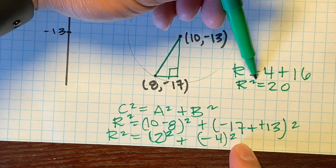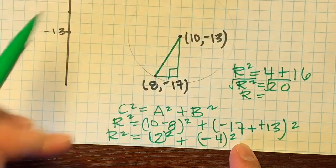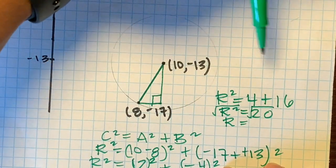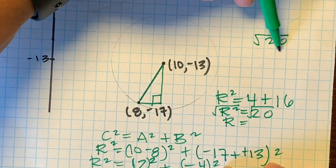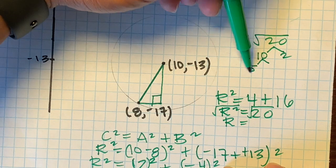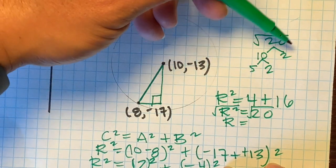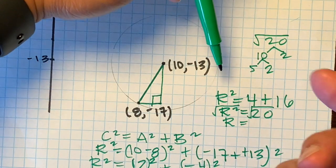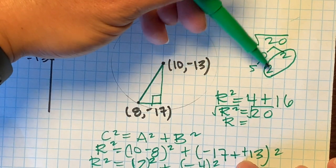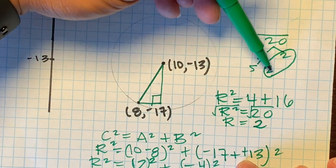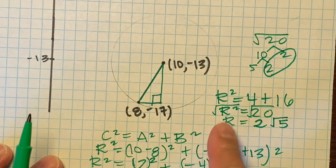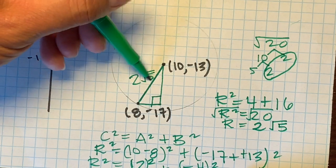To get r by itself, we square root both sides. With square roots, you're trying to find pairs. Let's factor 20: two numbers that multiply to 20 are 10 and 2, and two numbers that multiply to 10 are 5 and 2. All remaining numbers are prime. We have one pair of 2s, so the 2 comes out front, and the leftover factor is 5. So the radius is 2 square root of 5.